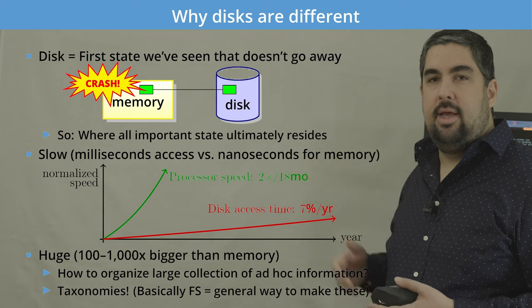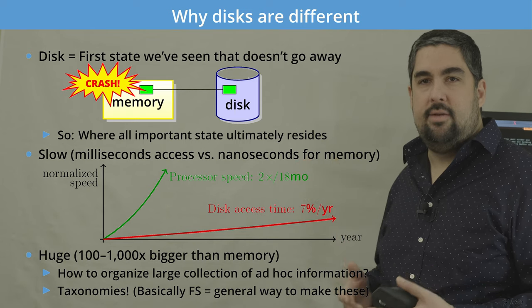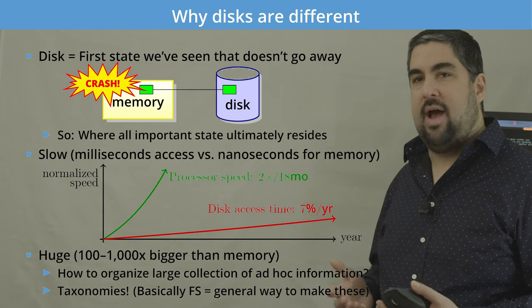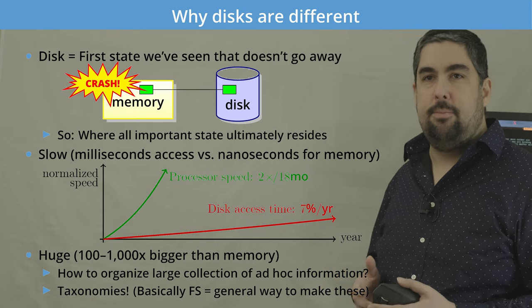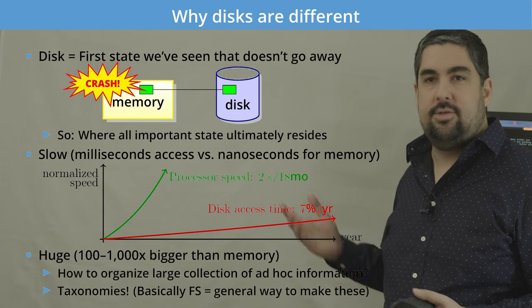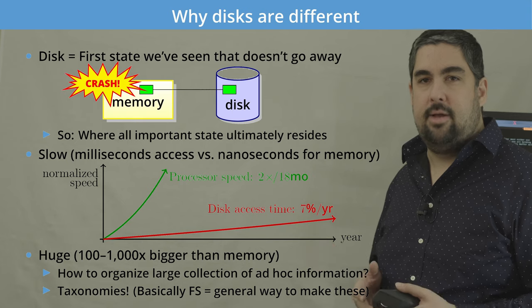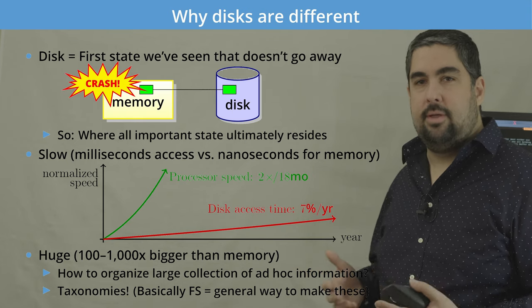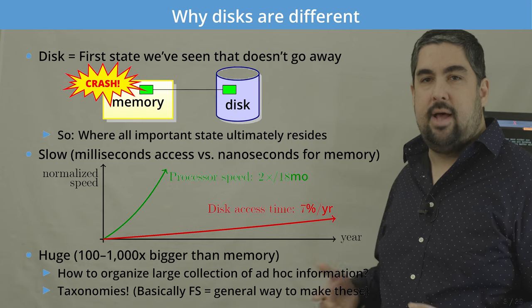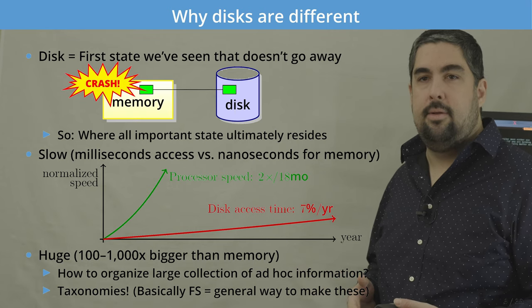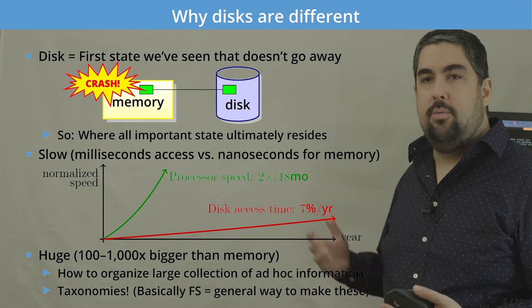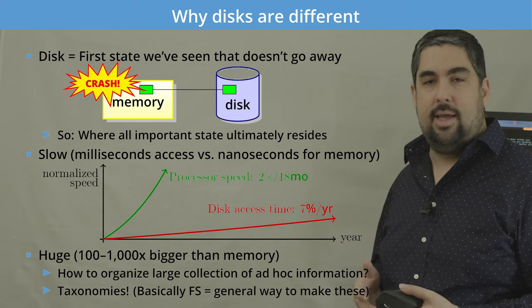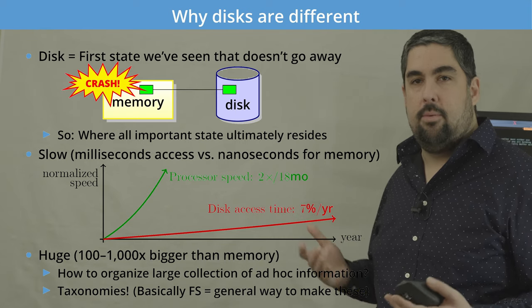Second, disks are relatively slow compared to processors. Every year the disk gets faster by just a few percent while processor speed doubles every 18 months. Third, disks are incredibly large — usually a hundred to a thousand times larger than memory — so we place most of our data there and are constantly accessing it to do our work.